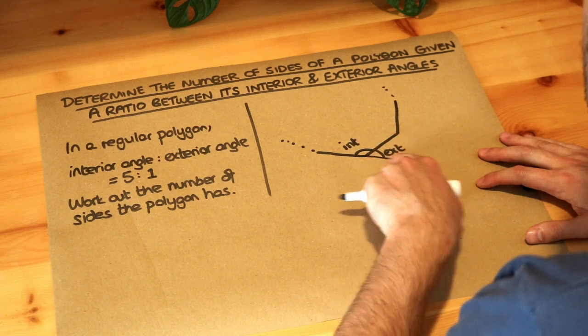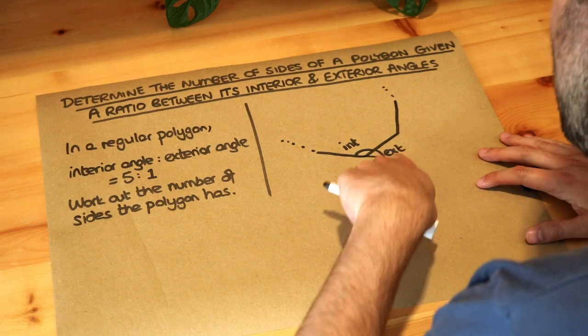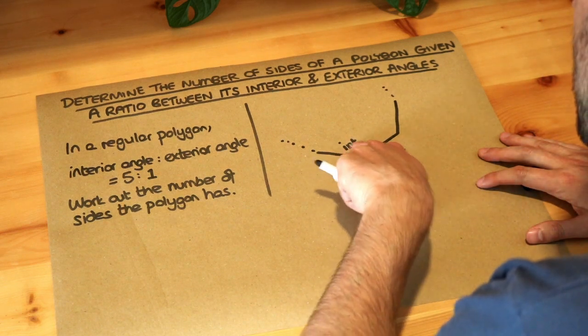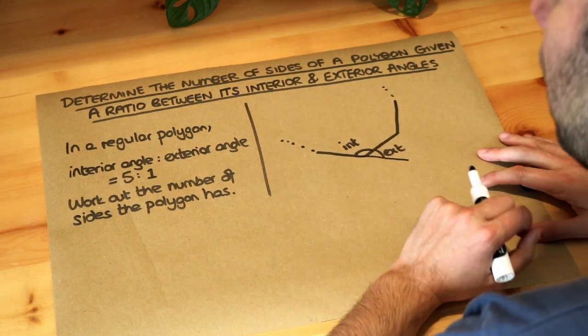So this side extended out like that, and we can clearly see that those two angles, the interior and exterior angle, add up to 180 degrees because they're on a straight line. We saw that in a previous video.